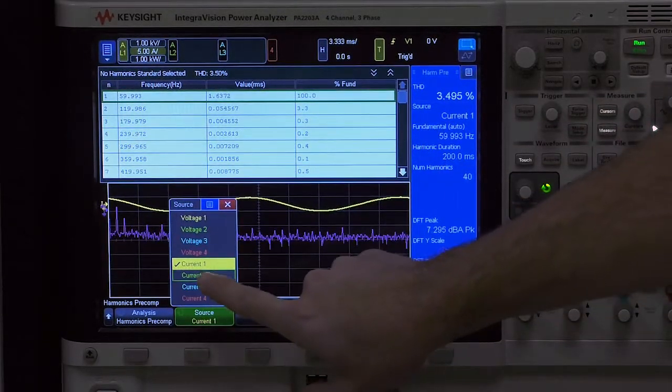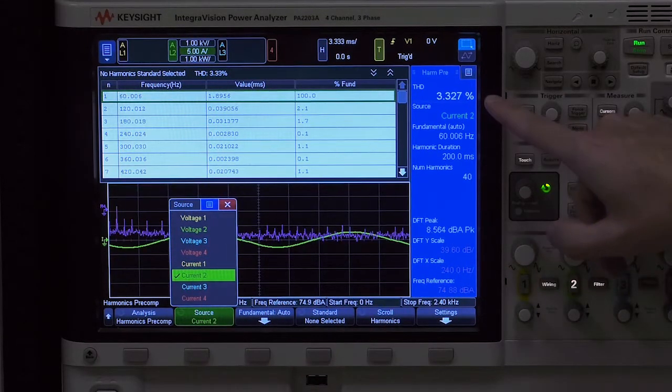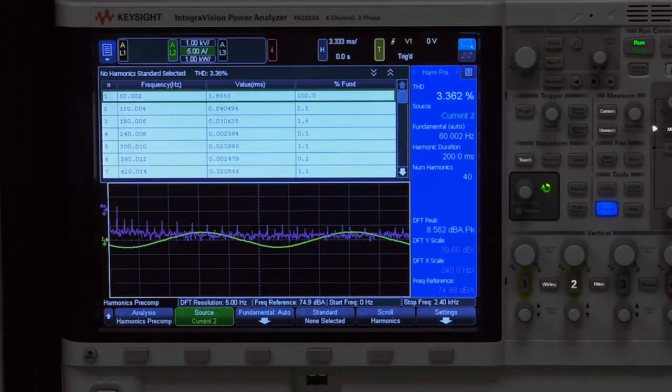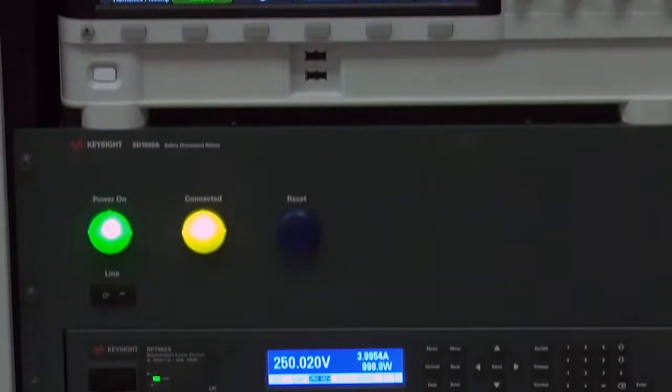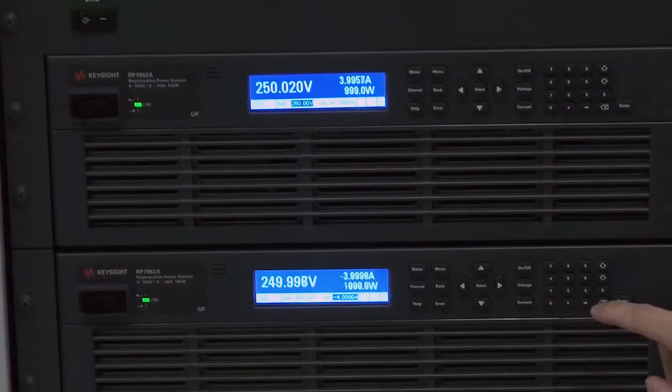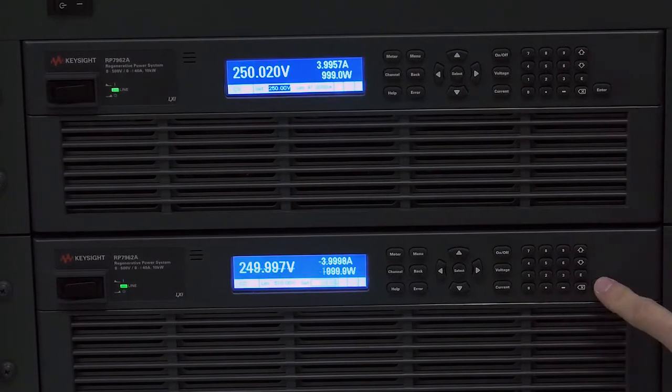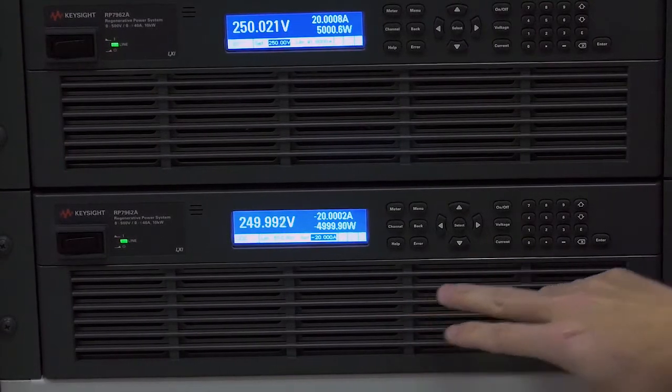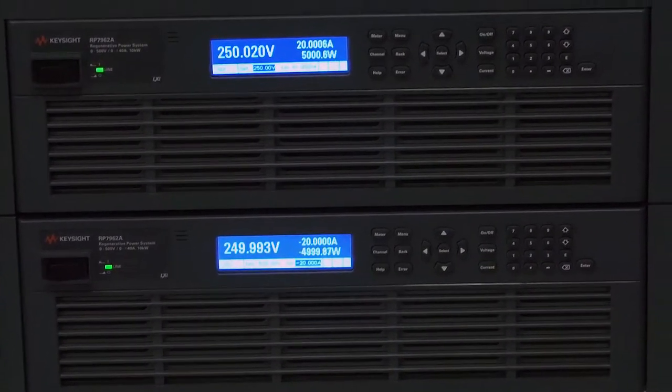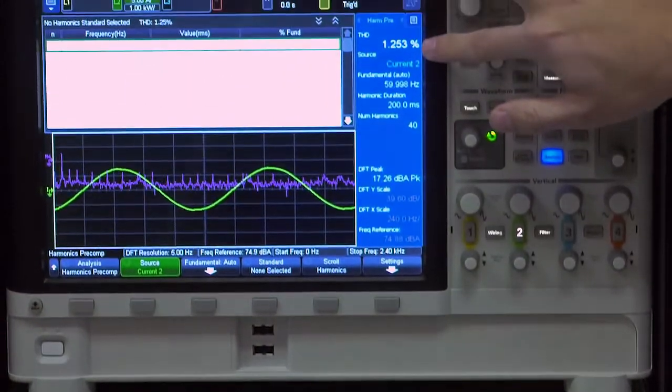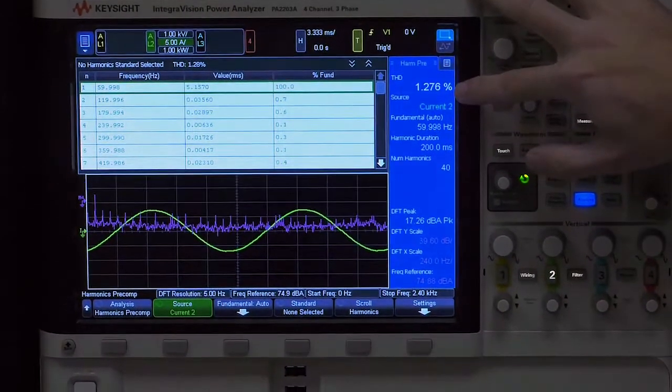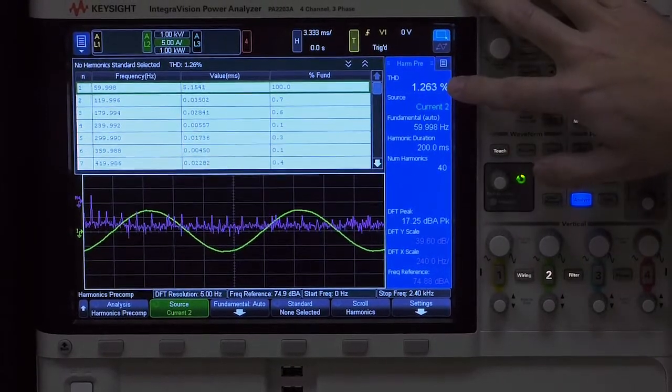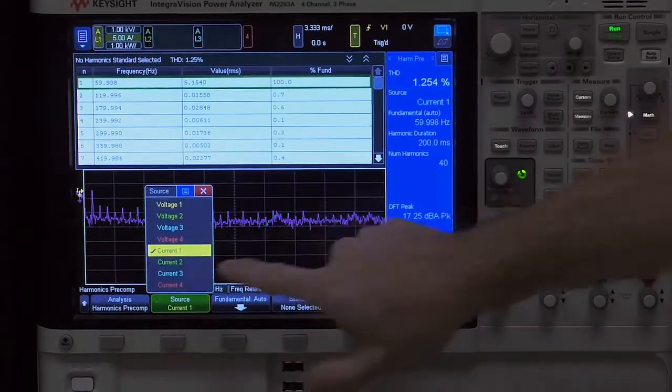Now if you take a look at another phase, the current of phase two, you can see the measurement is roughly the same, 3.3 percent. Okay, so that was 1000 watts. Let's go up to 5000 watts by changing that to 20 amps. So now we're sinking 250 volts, 20 amps DC back to the grid. And you can see that actually at higher powers the cleanliness is better. The total harmonic distortion goes down from three and a half percent to 1.2 percent. And again, we can look at the current of phase one. It's actually even better, about one percent total harmonic distortion. Let's look at phase three.